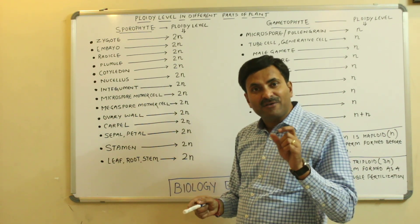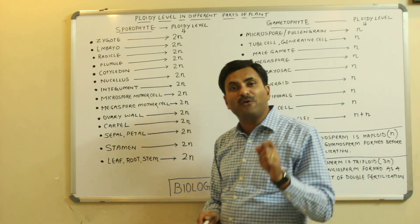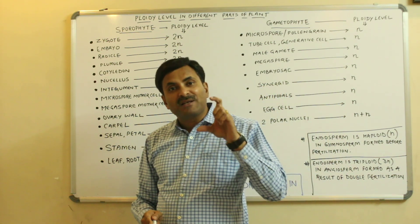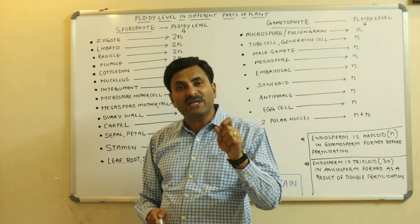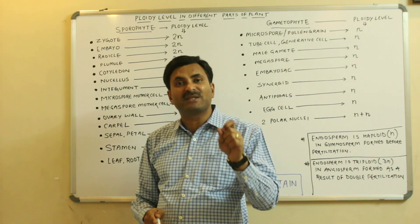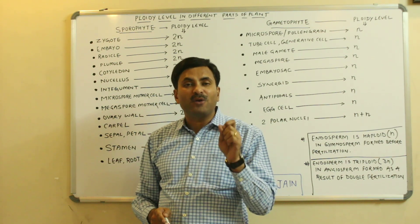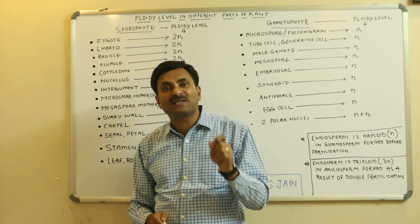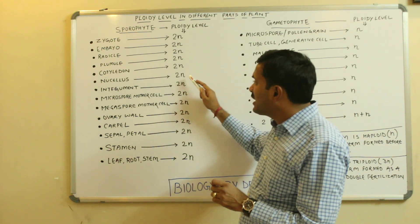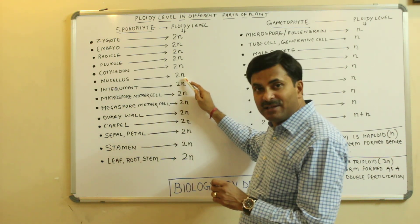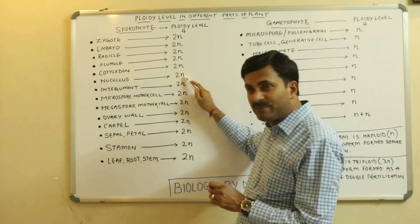Now, what is nucellus? When we study the structure of the ovule, the parenchymatous tissue found inside the ovule is called the nucellus, and always remember that the nucellus is a diploid tissue. So the nucellus has the ploidy level of 2N.